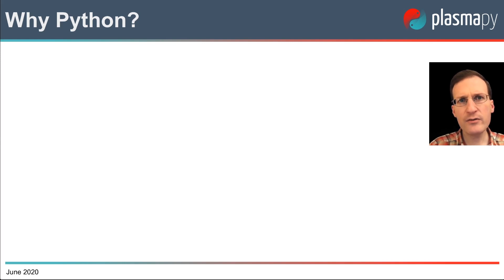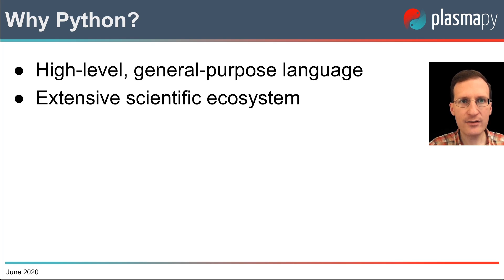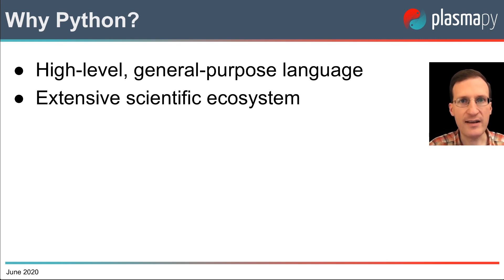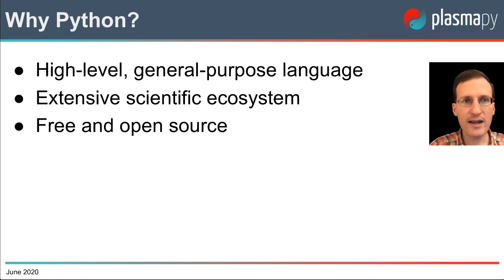So why do we choose Python as the programming language for this software ecosystem? Python is a high-level general-purpose programming language. The extensive scientific Python ecosystem contains hundreds of packages for things like machine learning, image processing, visualization, and data analysis. Choosing Python also lets us work with existing packages such as AstroPy and SunPy. Python is free and open source, so there's no need to spend hundreds or even thousands of dollars for an expensive software license.